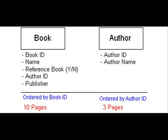Now moving to a specific example. Consider the book table and the author table. The book table has fields like book_id, reference yes or no — whether it's a reference book — author_id, and some other fields. It is printed on 10 pages and ordered by book_id. The author table is printed on 3 pages and ordered by author_id. Suppose I am looking for all author names who have reference books against them. If I start with the book table, I would have to search the author table, and if I start with the author table, I will also have to search the book table.